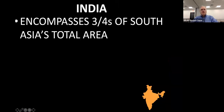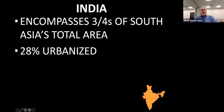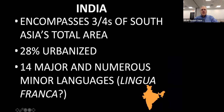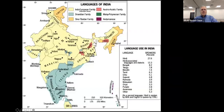India encompasses three-fourths of South Asia's total area. Twenty-eight percent is urbanized. There are 14 major and numerous minor languages. The lingua franca — most of you have guessed already — English will be the major government language, because the British were there at one time. Notice this map is full of different dialects and different languages. The yellow shows Indo-European family languages, while this is the Dravidian down here.